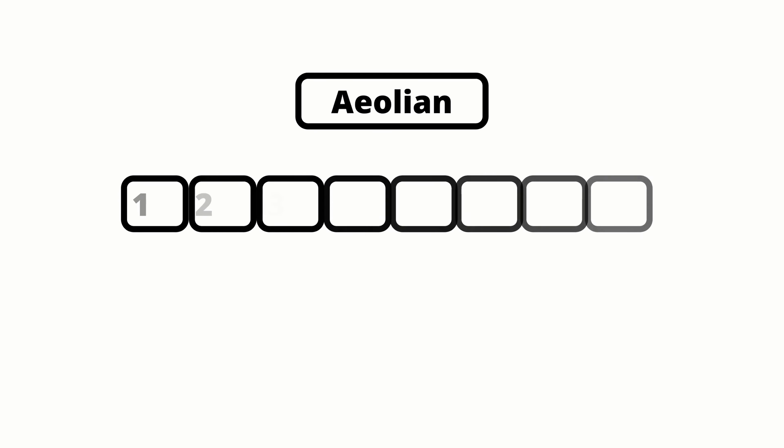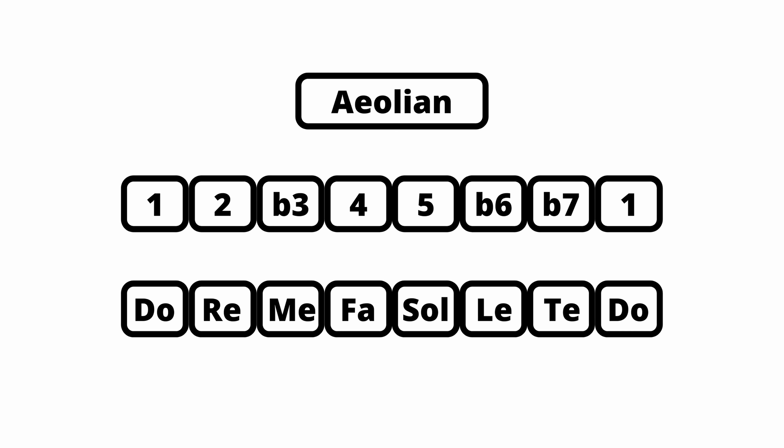Now we're moving on to our second reference mode, which is the Aeolian mode, also known as the natural minor scale. After the major scale, this is the mode that people are probably most familiar with because we hear it so much in western music. The formula for the Aeolian mode is 1, 2, b3, 4, 5, b6, b7, 1. In solfège, we sing this scale like this.